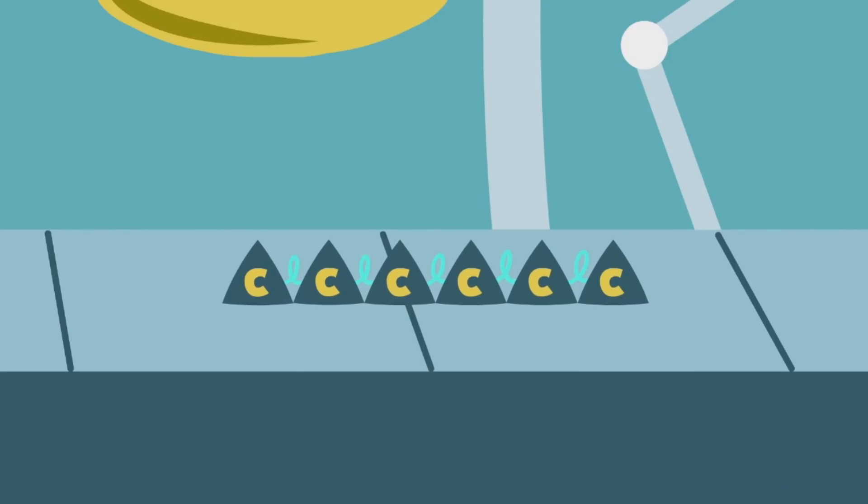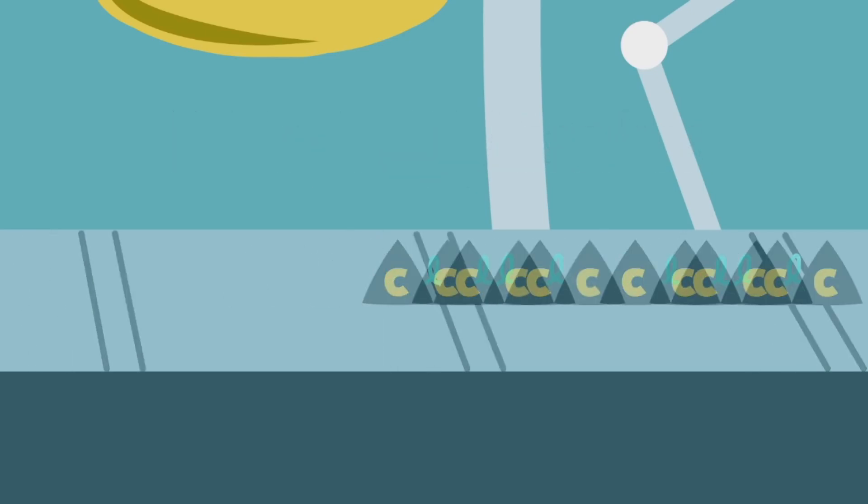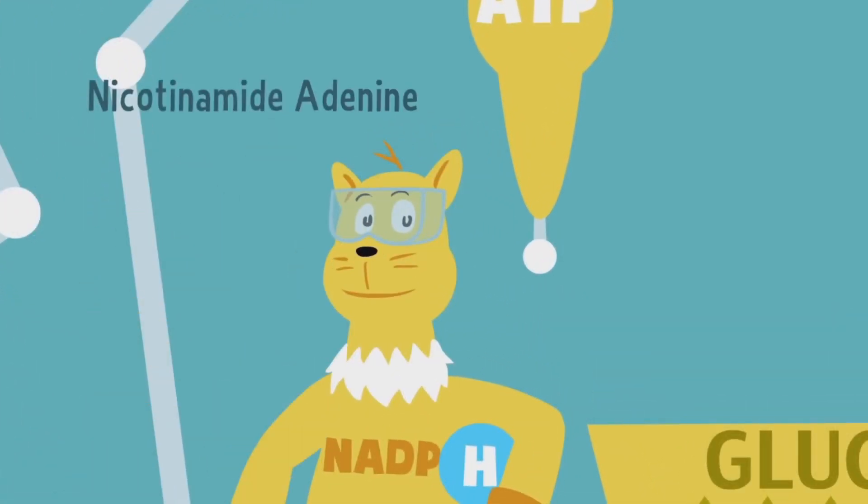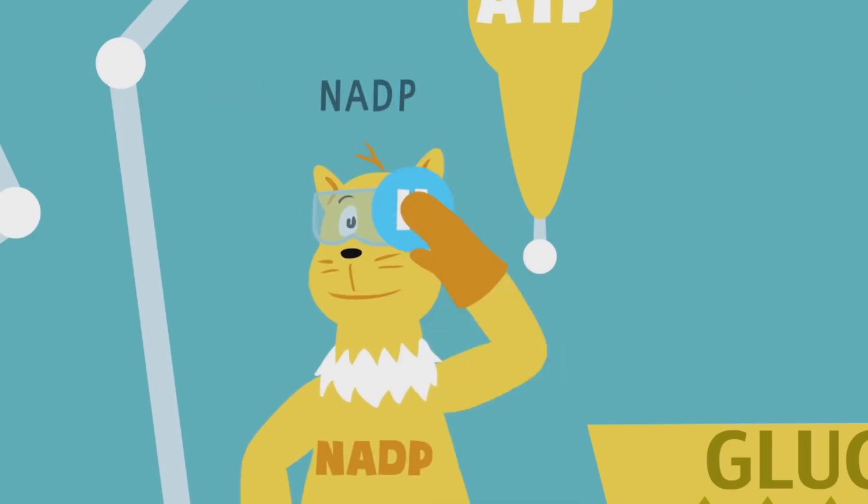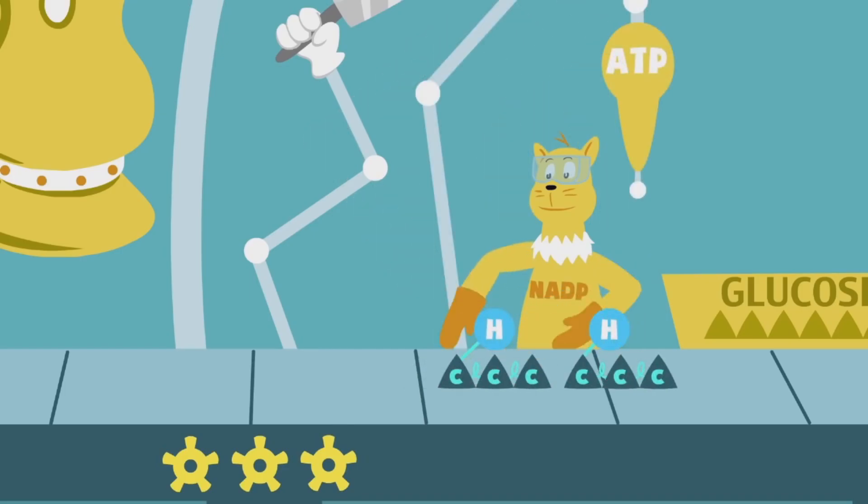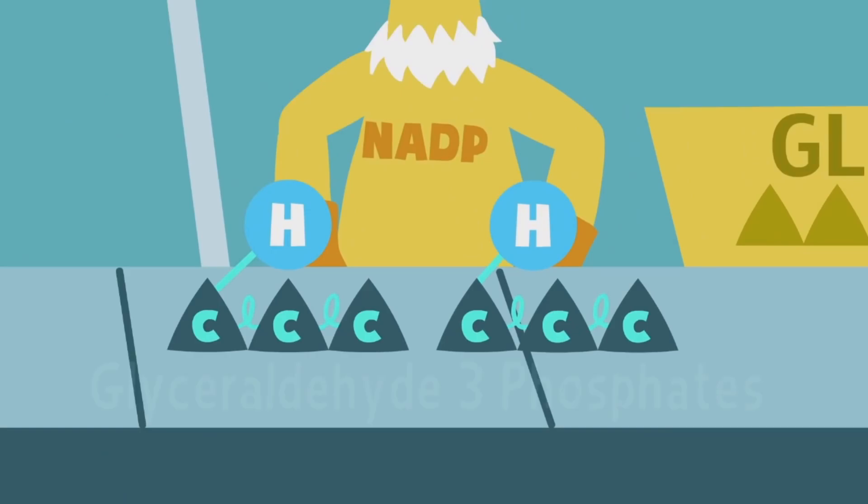This rapidly splits into two shorter chains containing three carbons each, called phosphoglycerates or PGAs. Enter ATP and NADPH. ATP, working like a lubricant, delivers energy while NADPH affixes one hydrogen to each of the PGA chains, changing them into molecules called glyceraldehyde 3-phosphates, or G3Ps.